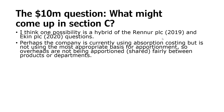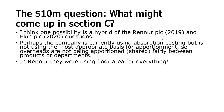Maybe there'll be a situation in this exam where the company is currently using absorption costing but it's not using the most appropriate basis for apportionment, so overheads are not being apportioned or shared fairly between different products or departments. You could be asked to calculate overhead absorption rates. In the Renner question, they were apportioning overheads between three departments but using floor area for everything. Floor area is appropriate for building-related costs — rent, business rates, property insurance, heat and light — then floor area is fine.